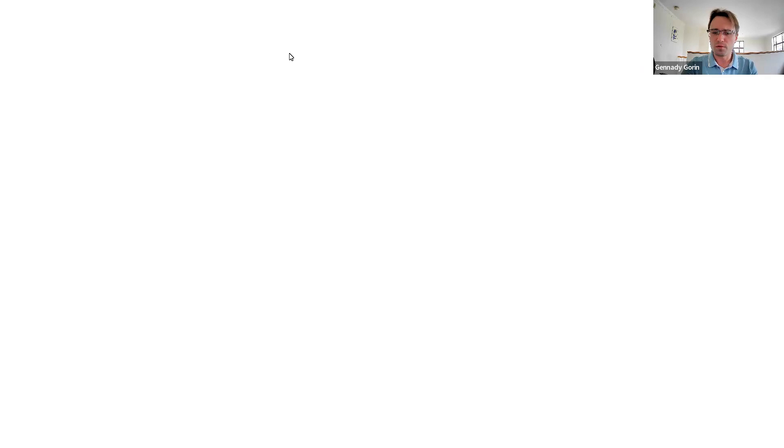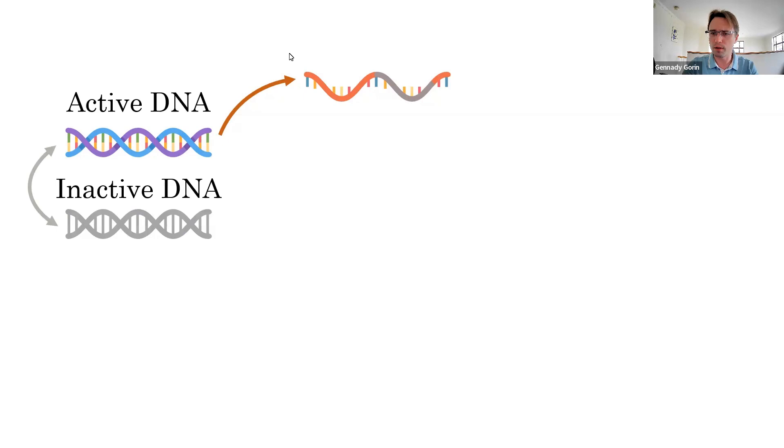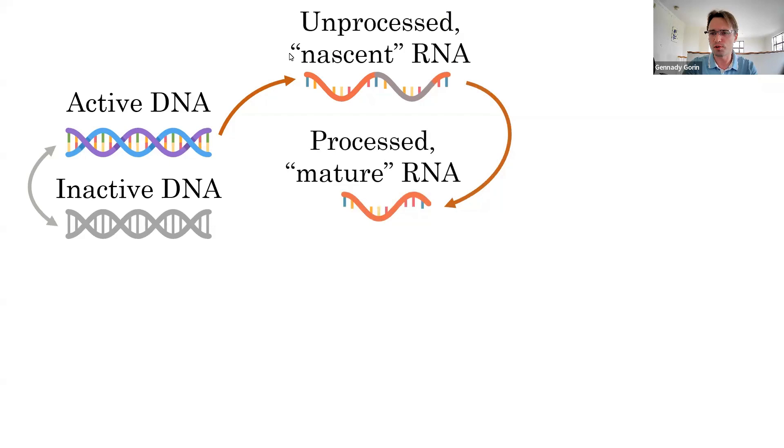Even if we just focus on the first part of the process, the first half of the central dogma, the actual details rapidly become quite complicated. Even if the gene is characteristic to a particular cell type, its DNA is regulated. It's not always just on. It switches on and off. RNA is typically not used as is. Instead, typically a long gene is transcribed, and then large portions are cut out.